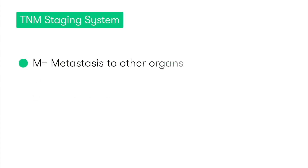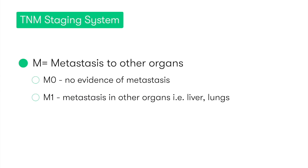Moving on to M, this refers to whether the cancer has metastasised to any other organs. If there's no evidence of metastasis, then this is M0. But if the cancer has spread to other organs, such as the liver or the lungs, then this is M1.